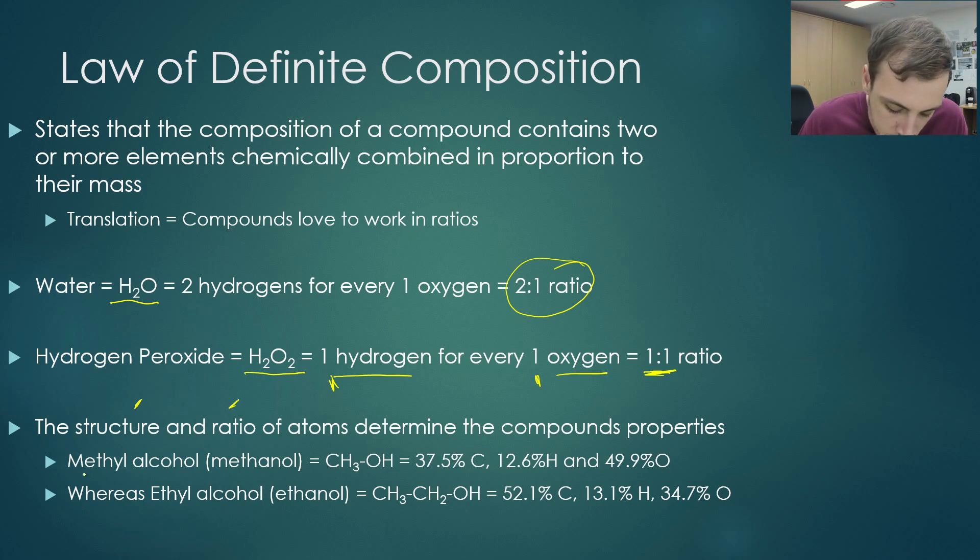So let's look for example here. So here we have methyl alcohol, or methanol. Now this contains one CH3 group, or a methyl group, and OH. So looking at the percent mass, out of this entire molecule here, 37.5% of its weight is carbon, 12.6% is hydrogen, and 49.9% is oxygen.